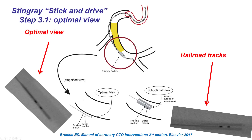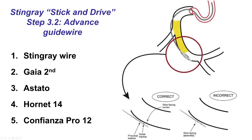Once the optimal view is selected, the next step is to advance a guide wire. In addition to the Stingray wire, several others can be used, such as the Gaia, the Astato, the Hornet, and the Confianza Pro 12.